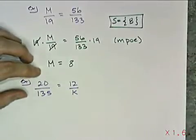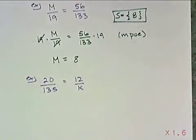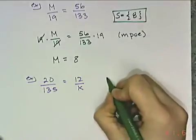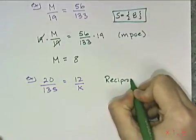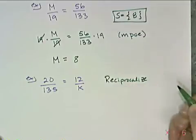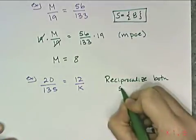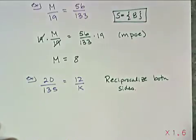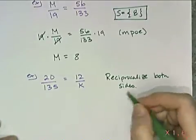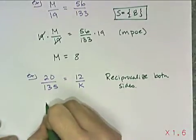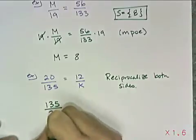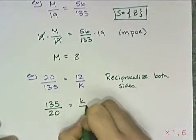Now, we know that as taking the reciprocal, but I don't like saying that. I like saying reciprocalize. So we're going to reciprocalize, which is not a real word. It's totally made up, both sides. So what I'm going to do is I'm going to take 135 over 20 and k over 12.